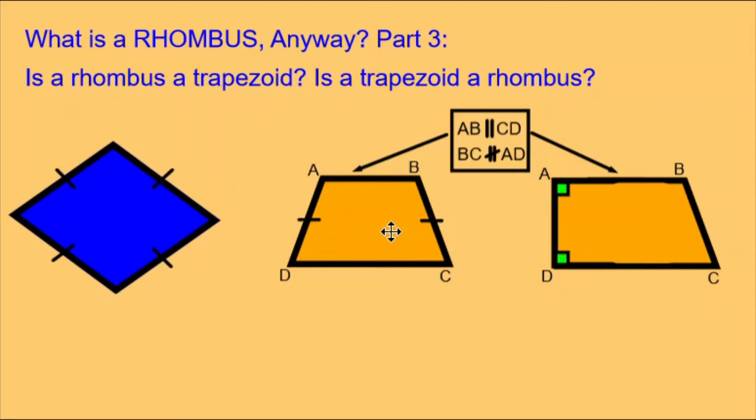We have two different yellow trapezoids. The one on the left is an isosceles trapezoid, and we can see that by the little lines that show these two opposite sides are equal in length.